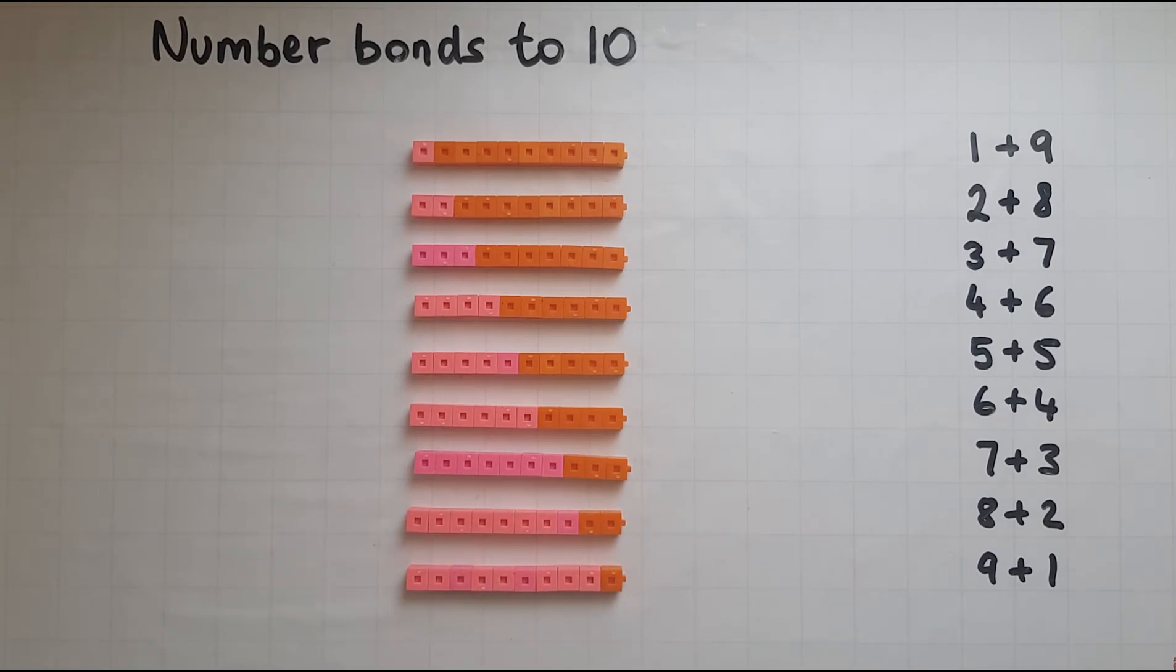So maybe throw a die and if you get one what is the other number that you need to make 10. If you get a 2 what's the other number that you need to make 10 again. So it's really important that you practice this.